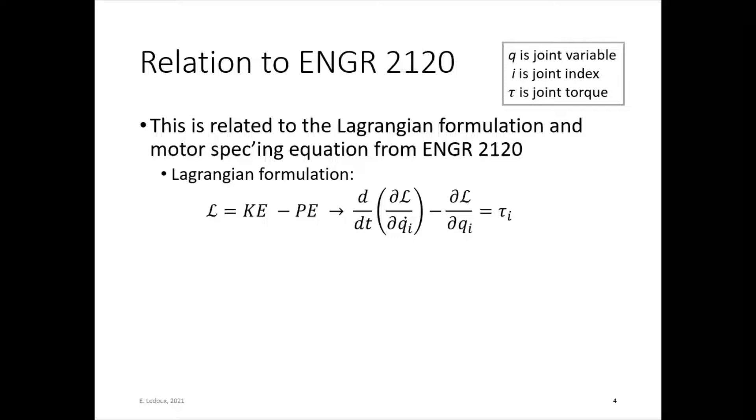Here, q is the joint variable, so that will be θ or d, depending on if it's revolute or prismatic. i is the joint index, whichever joint it is, and τ is the torque.